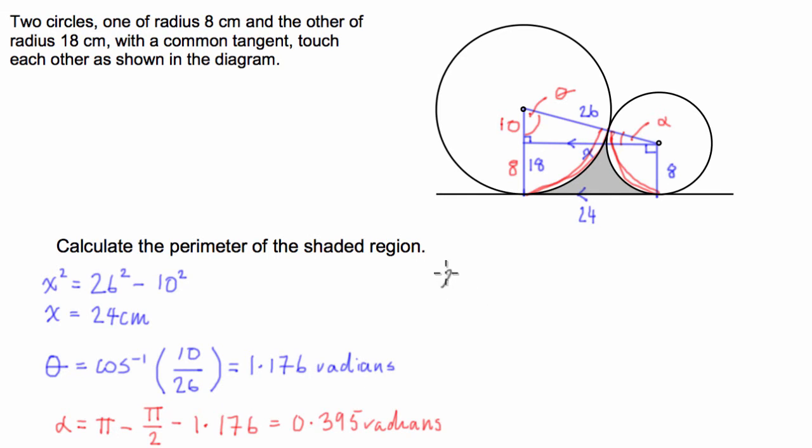We know that arc length is equal to the radius times theta. This is if theta is measured in radians anyway. So we know that the radius of the big circle is 18, and we're going to multiply that by the angle theta, 1.176, to give an answer of 21.168 centimetres. Great.